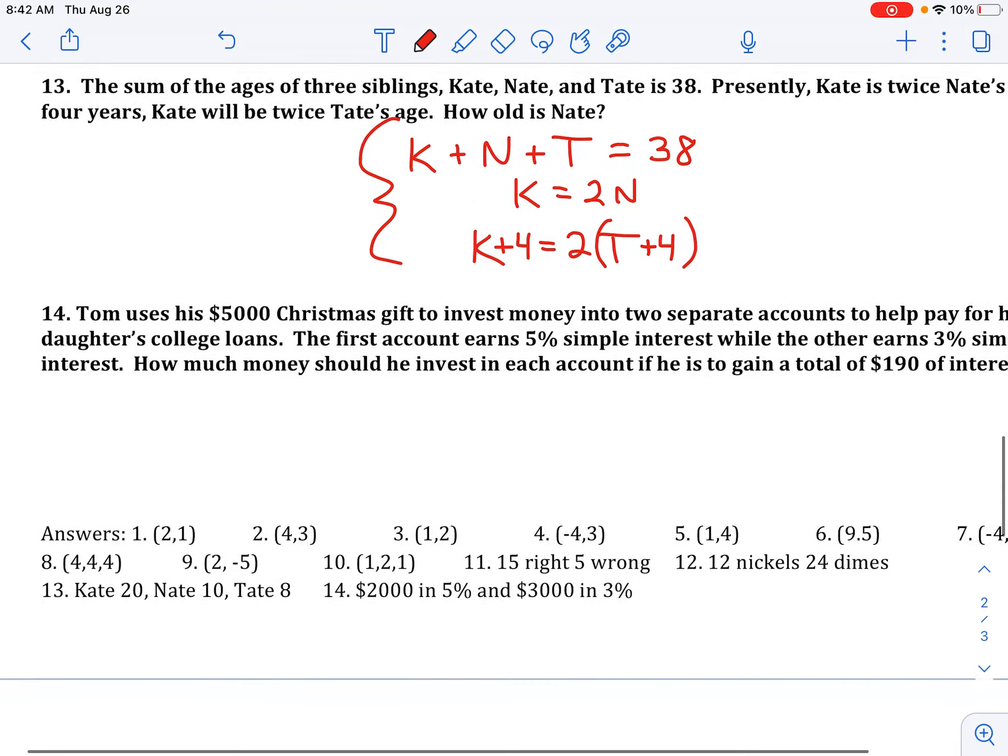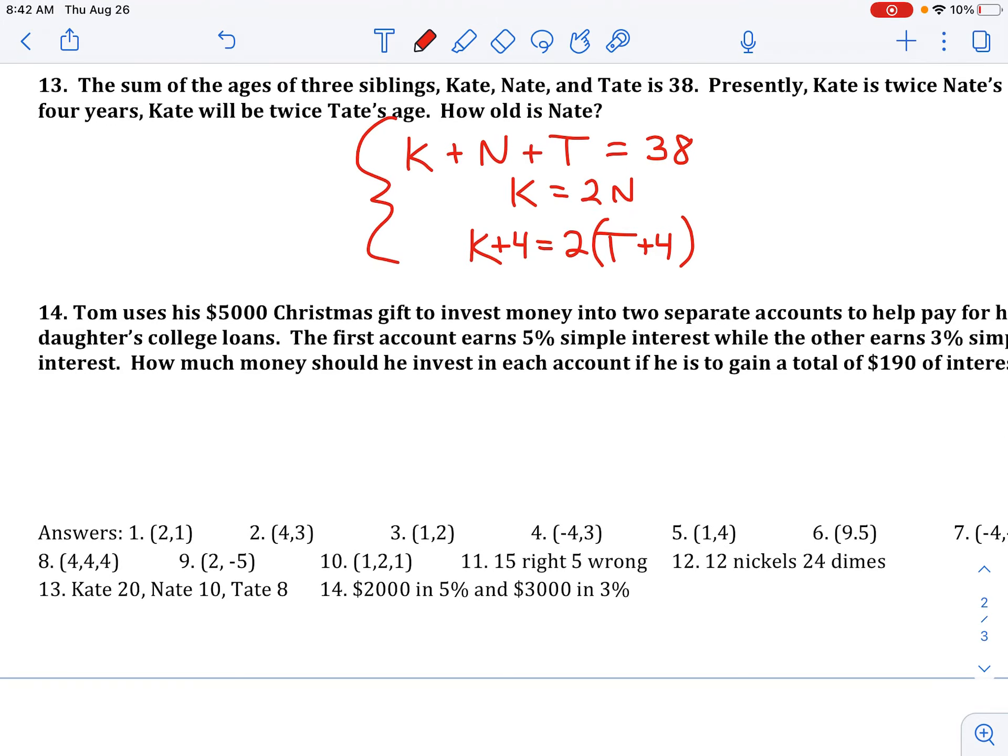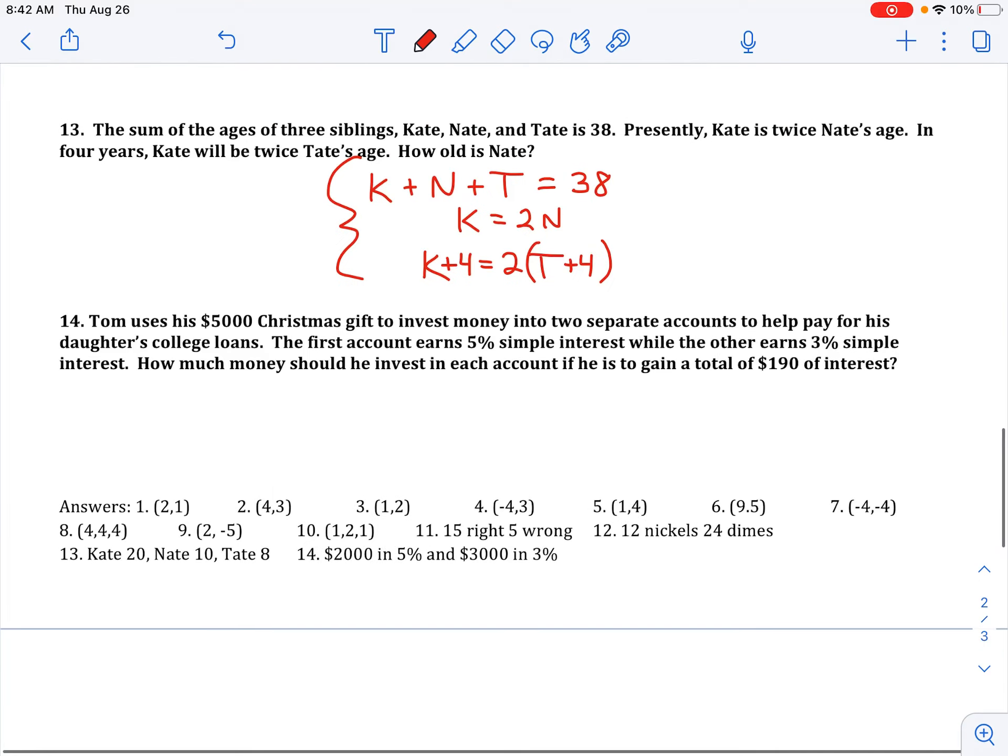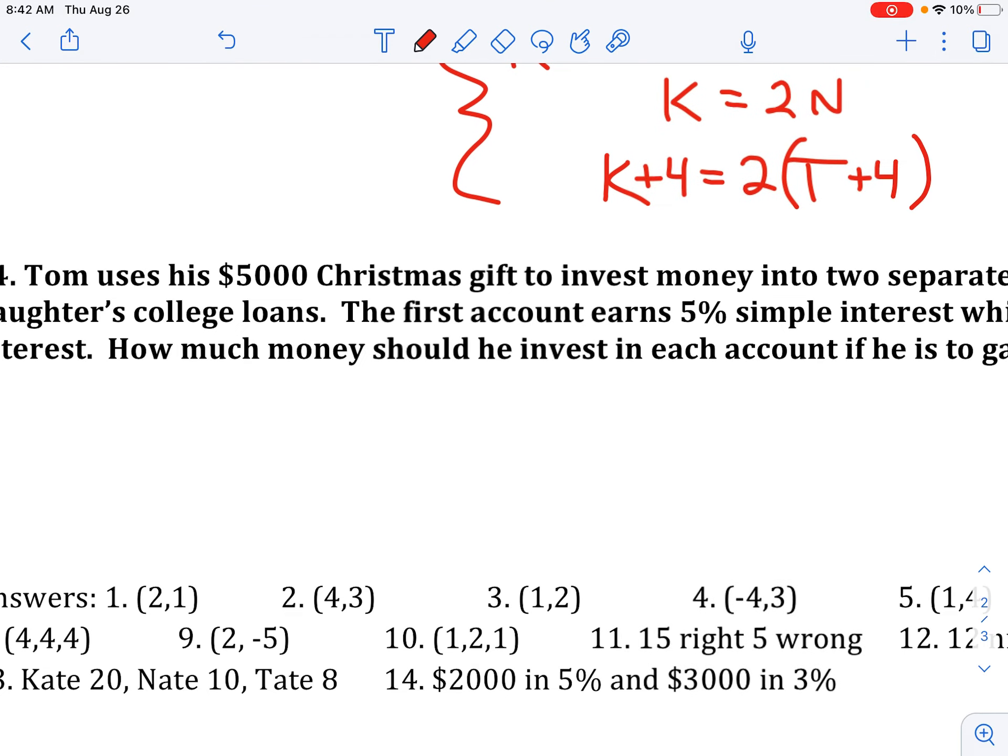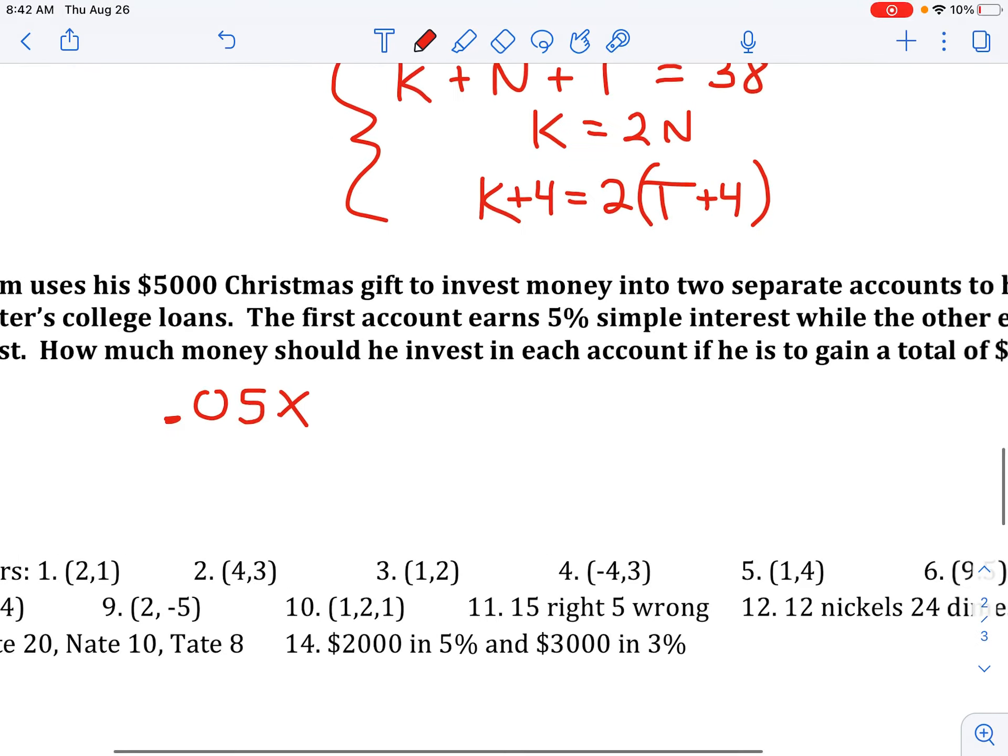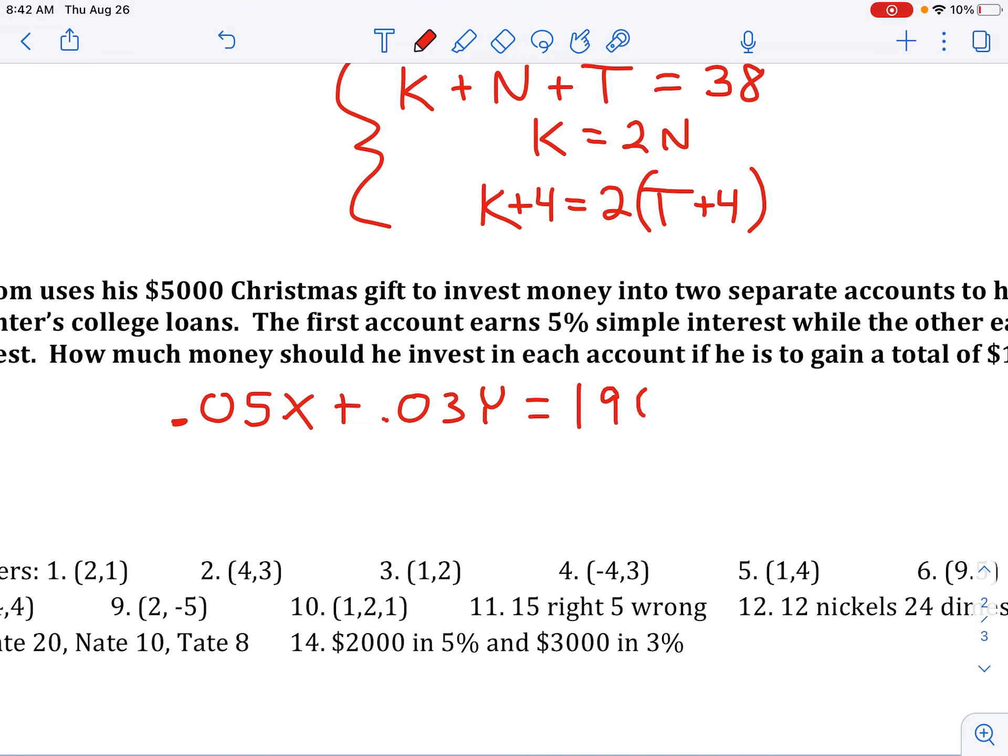And the last one, we have Tom uses a $5,000 Christmas gift, nice Christmas gift, to invest into two separate accounts to help him pay for college loans. And so we want to know how much money does he put into each account. The first one earns 5% interest and the second account earns 3% interest, and he earned $190 in interest. So for an interest equation, we could say 0.05X, X being how much he put in that account, plus 0.03Y, Y being how much he put in the 3% account. He earned a total of $190.